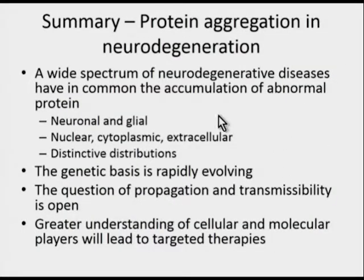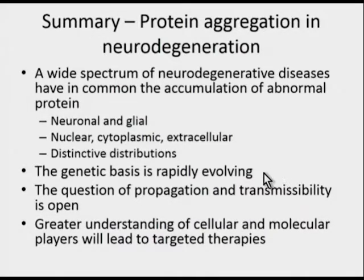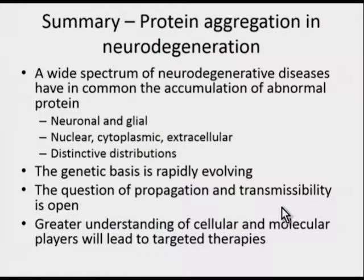To summarize: there is a wide spectrum of neurodegenerative diseases sharing abnormal protein accumulation. This can be neuronal and glial, nuclear, cytoplasmic, or extracellular, with distinctive brain distributions that neuropathologists use to identify the disorder. The genetic basis is rapidly evolving. The question of propagation and transmissibility remains open, and greater understanding is hoped to lead to targeted therapies for patients in the future.